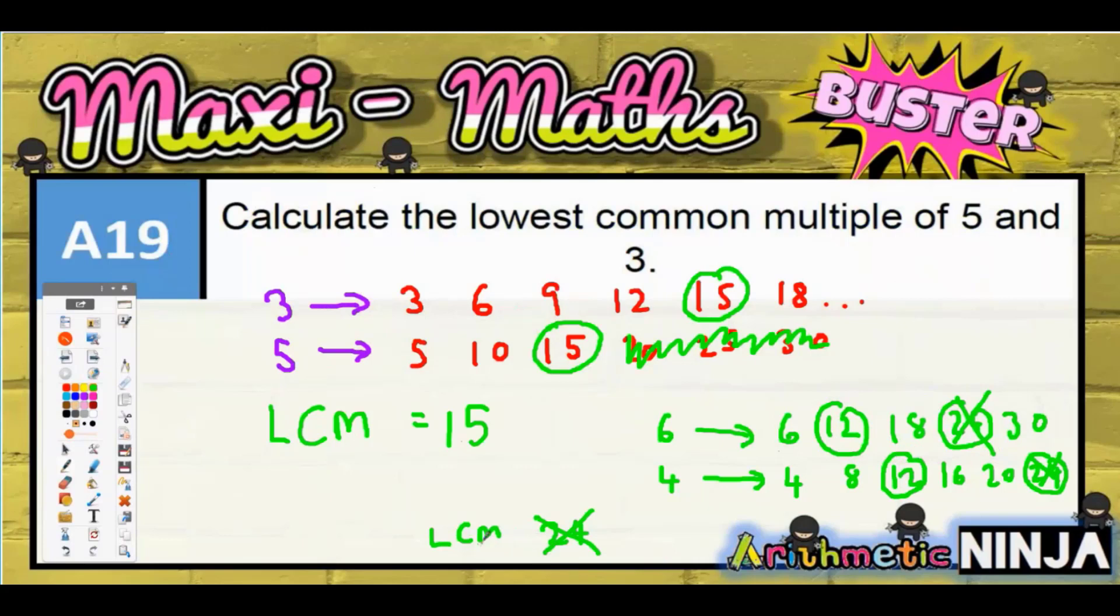So the lowest common multiple is not achieved with 6 and 4 by just timesing them together; it's going to be 12, isn't it? So you've got to be really careful not to just think that all you have to do is times them together. You've actually got to list the threes, list the fives, and then you'll see that 15 is the lowest in both lists.